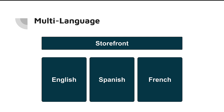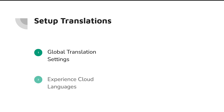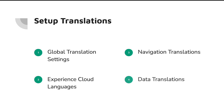For our storefront we're going to set up two additional languages. By default we have English, but we want to set up Spanish and French, with a single storefront for all three. The high-level steps are: number one, turn on global translation services inside Salesforce; number two, go into Experience Cloud and enable those same languages in the community storefront; number three, translate the navigation; and number four, do the data translations.